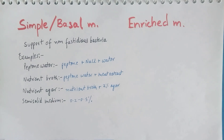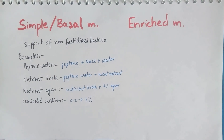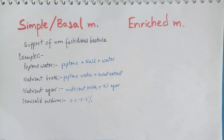In nutrient broth, whose main function is to provide nutrition to the bacteria, meat extract is added. In nutrient agar, it is a solid medium, so 2% agar is added. In semi-solid media, the concentration of agar is reduced to 0.2 to 0.5%. Uses of basal media include biochemical tests and studying the bacterial growth curve.